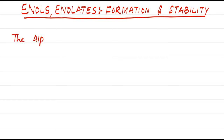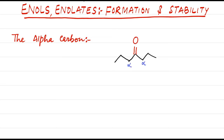First, let us understand what is alpha carbon. For compounds containing a carbonyl group, Greek letters are used to describe the proximity of each carbon atom to the carbonyl group. The carbonyl group itself does not receive a Greek letter. In this example, there are two carbon atoms designated as alpha positions. Hydrogen atoms are designated with the Greek letter of the carbon to which they are attached. For example, the hydrogen atoms — protons — connected to the alpha carbon atoms are called alpha protons.